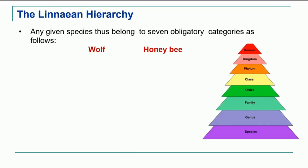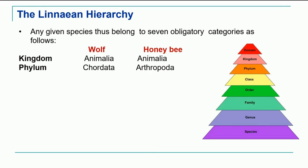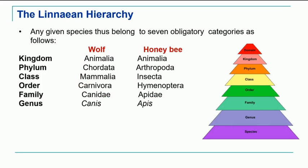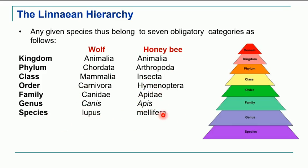As examples, consider wolf and honeybee. The kingdom for both is Animalia. Phylum for wolf is Chordata; for honeybee it is Arthropoda. Class for wolf is Mammalia; for honeybee it is Insecta. Order for wolf is Carnivora; for honeybee it is Hymenoptera. Family for wolf is Canidae; for honeybee it is Apidae. Genus for wolf is Canis; for honeybee it is Apis. Species for wolf is lupus and for honeybee is mellifera. So the scientific name of wolf is Canis lupus and of honeybee is Apis mellifera.